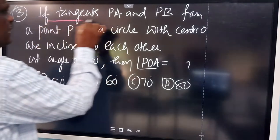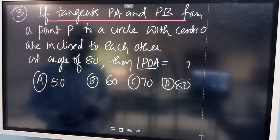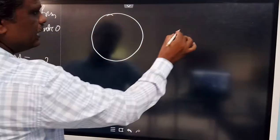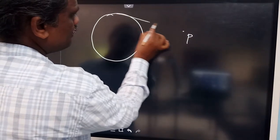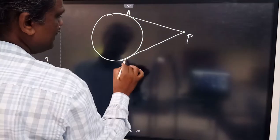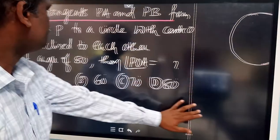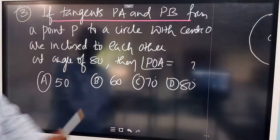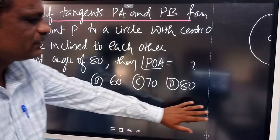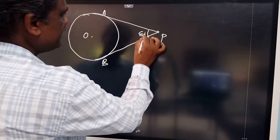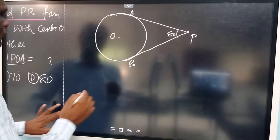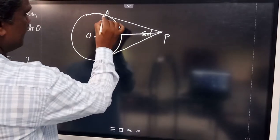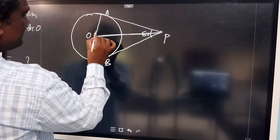The next question: PA and PB are tangents drawn from a point P to a circle with center O. They are inclined to each other at an angle of 80 degrees. Find the angle POA.